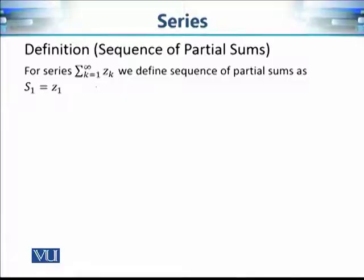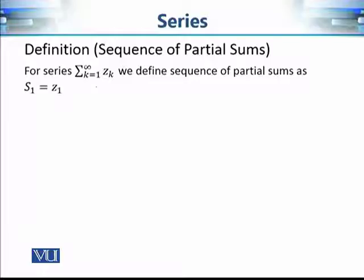Let's see how this idea works. If we have a series from k equals 1 to infinity of z_k, with terms z1, z2, z3, and so on, then we relate a sequence of partial sums to it. The first term S1 is z1. The second term S2 is z1 plus z2, the sum of the first two terms. The third term S3 is the sum of the first three terms. The nth term S_n is the sum of the first n terms of this infinite series.